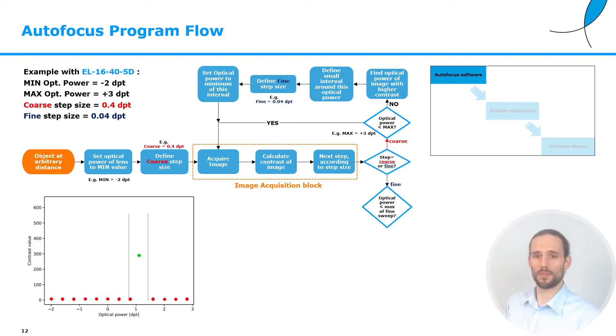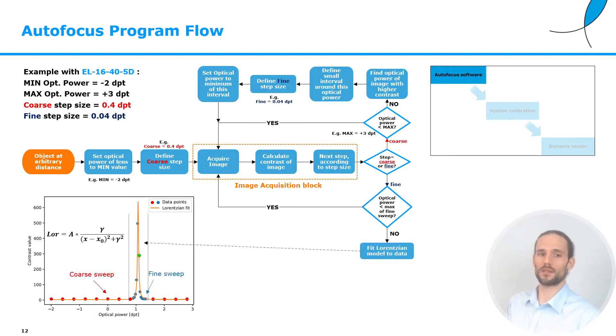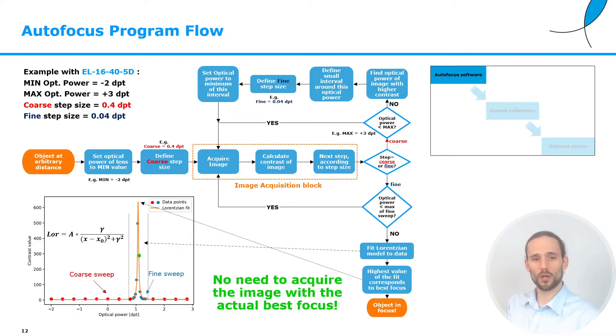And we will go again through the image acquisition block. Similar as before, we will basically now check whether the step size is fine or coarse. And of course, at this point, we are in the fine step size regime. And we will check again whether the optical power is smaller than the maximum optical power we have defined for the fine sweep. In case this is true, we will go again and again through the image acquisition block. At the point where the optical power now is bigger than the max of the fine sweep, we are basically done. We will plot all the points that we have acquired and we will fit a Lorentzian model to this data. The maximum of this Lorentzian curve will be the best focus. Now we can move the lens to that specific optical power and we will have our object in focus. I want to point out that the power of this approach is that one does not need to acquire the image with the best focus, but this is given by the maximum of the fit.